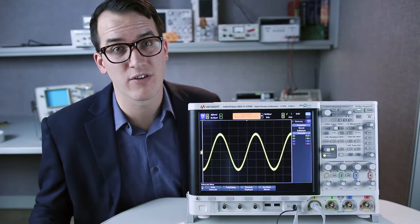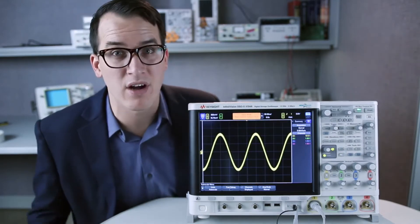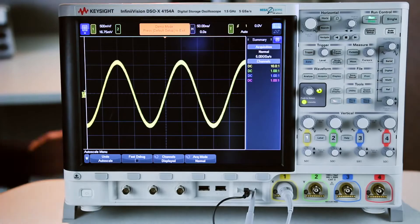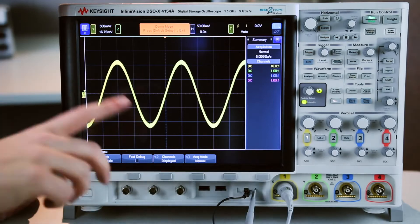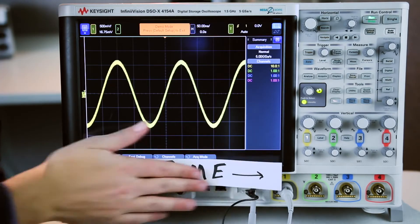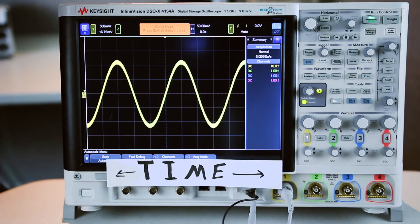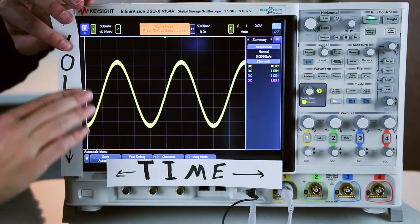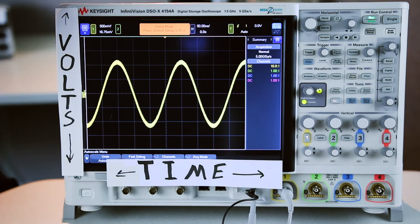At its very core, an oscilloscope helps you visualize what's happening on your electrical signal. The first thing we look at is we see this nice sinusoidal waveform on the screen. What's going on? Our x-axis, our horizontal axis here, is time and our vertical y-axis here is volts. So we can see over time my system has a sinusoidal electrical signal.